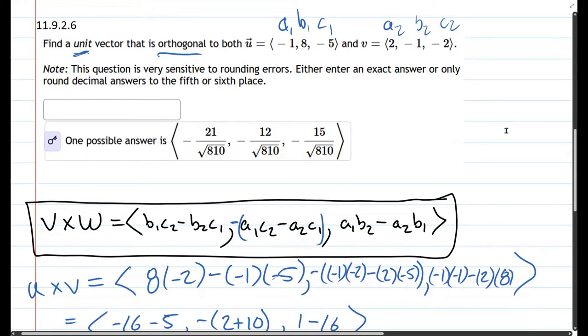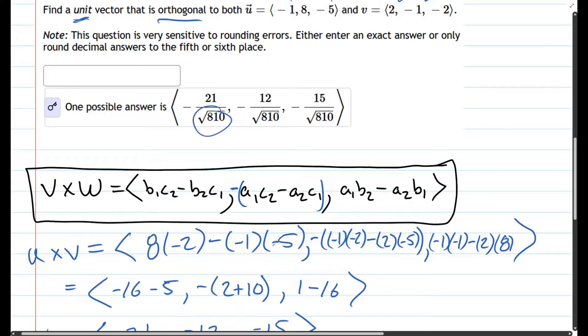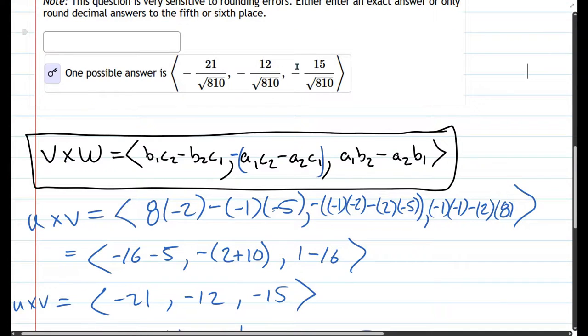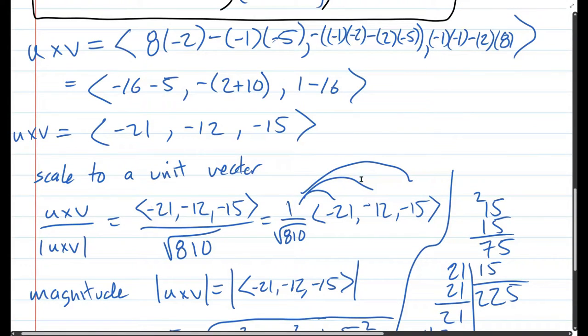So we see that square root 810 distributed, and negative 21, negative 12, negative 15. And that's what we got.